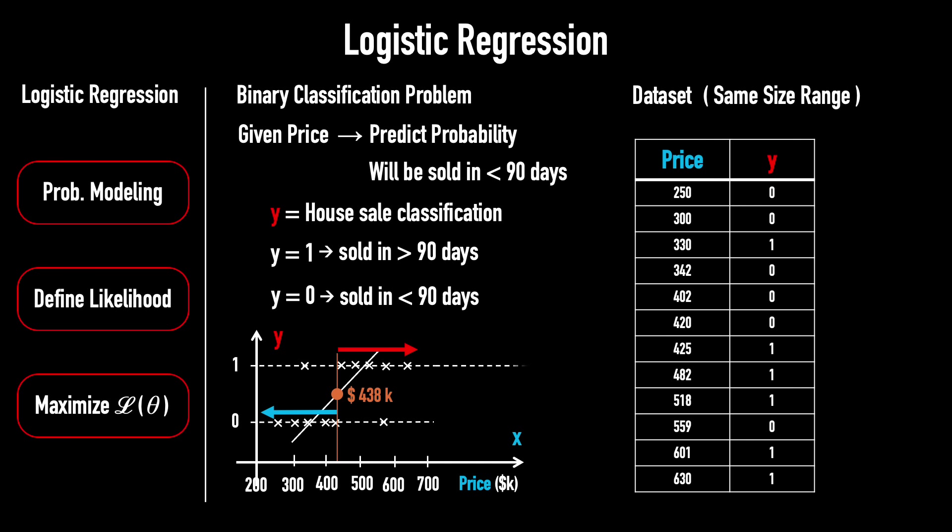However, if there's an example far away on the right, like this one, the line becomes less steep, and the midpoint shifts to the right. As a result, almost all houses fall to the left of the new midpoint, including those that were actually sold in over 90 days. Obviously, this new line no longer correctly classifies houses.